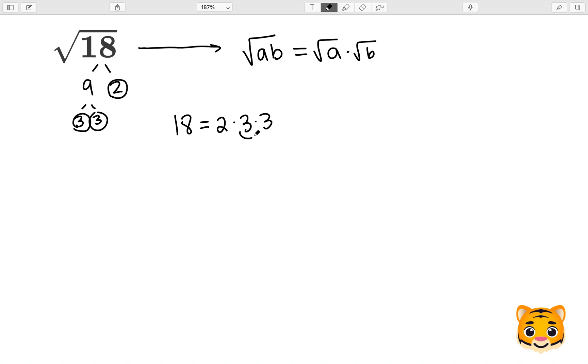Now if you notice, 3 times 3 is 9, and this gives us a square root of 3. So we'll want to combine these when doing the square root. What we can now write this as is 2 times 9.